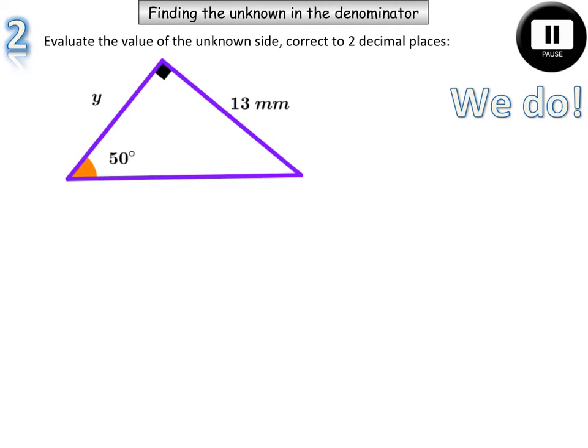Pause the video and attempt this question, and let's see if you can get out the answer. Step one is to determine which ratio we use: sine, cos, or tan. We have the opposite. We don't have the hypotenuse, so that leaves us with the adjacent. The opposite and adjacent is going to be the tangent ratio. So opposite over adjacent. Tan 50 is equal to opposite over adjacent. There's the opposite, here's the adjacent.